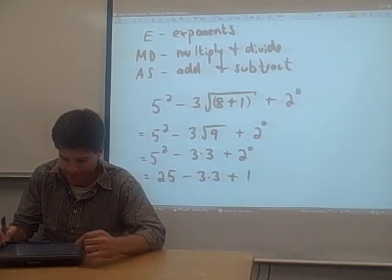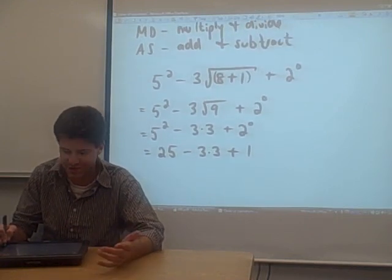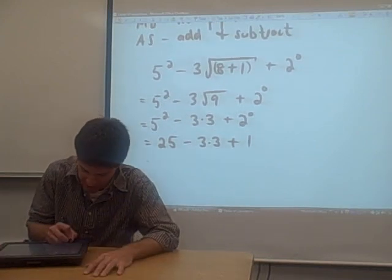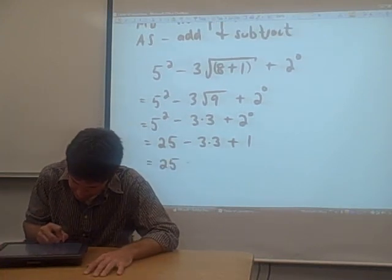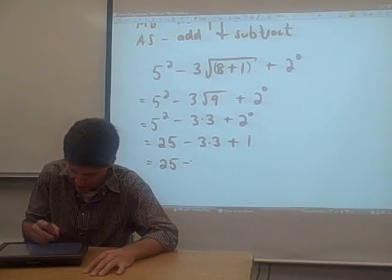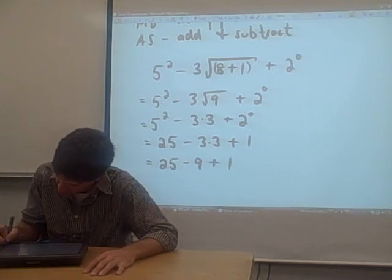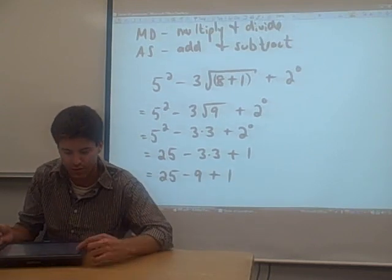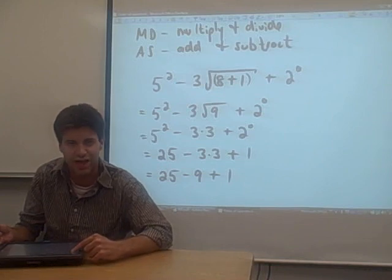Now it's time to multiply and divide. I don't see any division, but I do see some multiplication. 25 minus three times three. Three times three is nine, so I'm going to put that in there. And now we're finished with the multiplication and division.